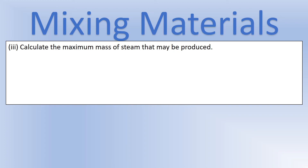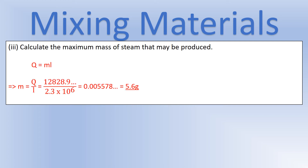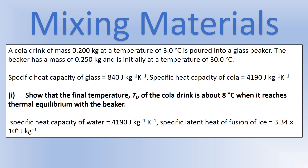Now calculate the mass of steam produced. Since we're dealing with a state change, use Q = mL and rearrange to make mass the subject. Substituting the unrounded values and converting from kilograms to grams gives a final answer of approximately 5.6 grams of steam.